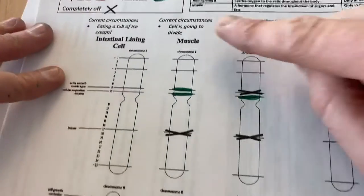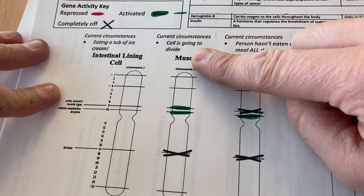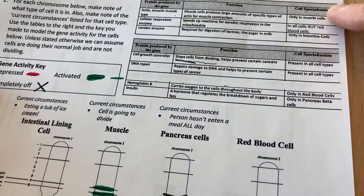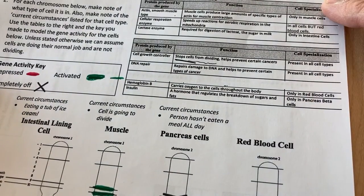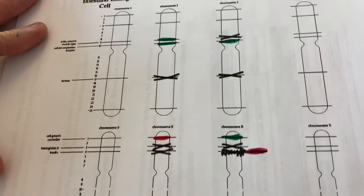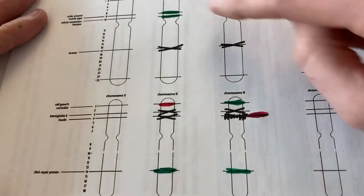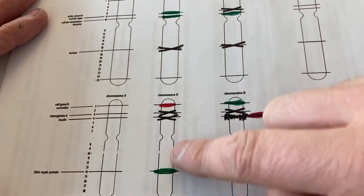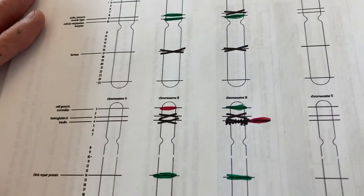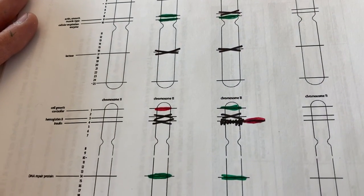What we see here is an example of the same DNA in all of these cells. But depending on the cell type — using this reference chart — and also depending on the circumstances, that DNA is going to be read differently in each cell. That's gene expression.